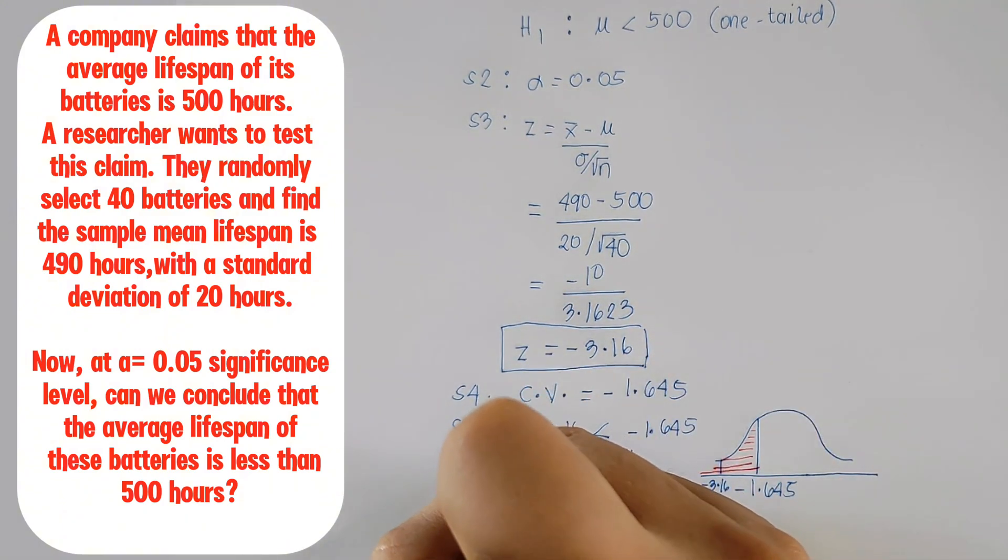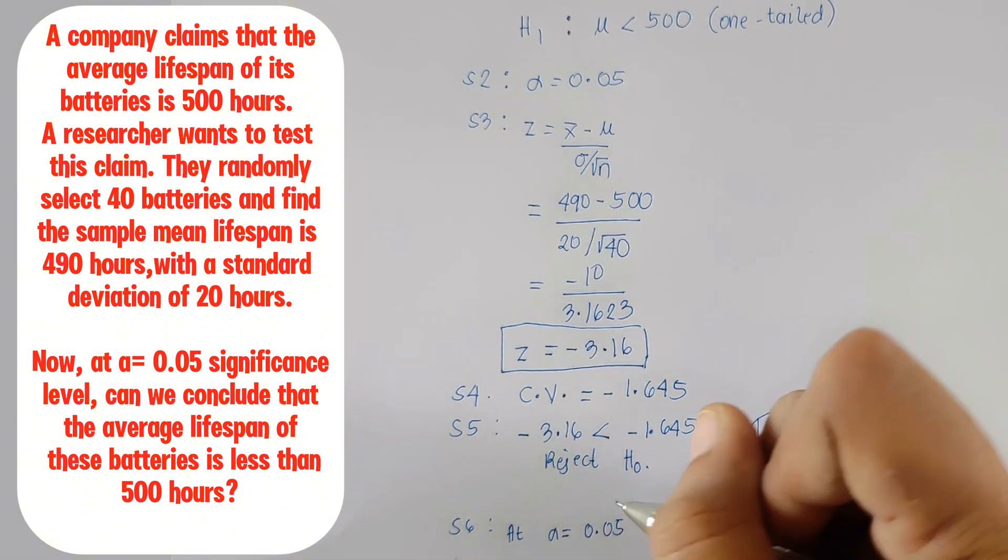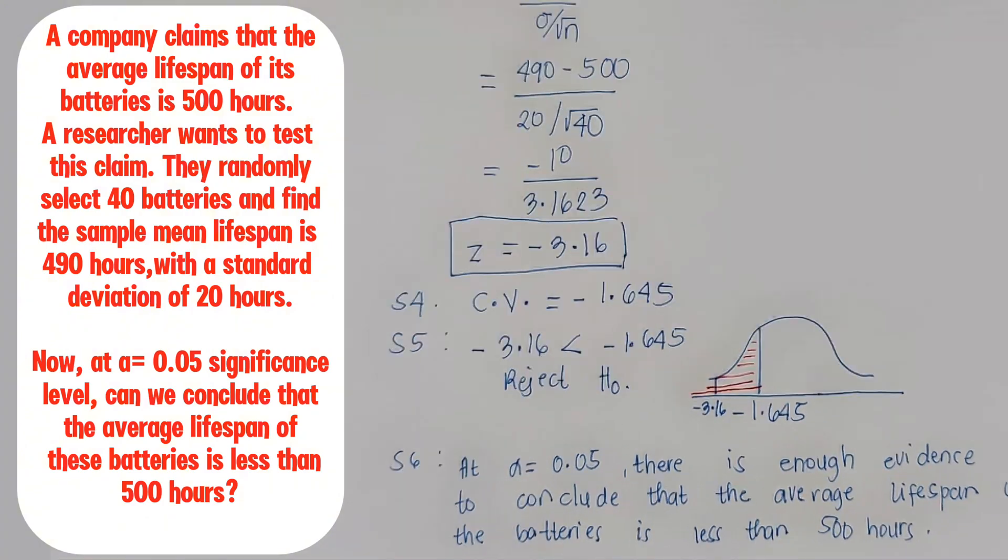Final step is to construct a conclusion. Since we reject the null hypothesis, we can say that at 0.05 significance level, we have enough evidence to conclude that the average lifespan of the batteries is less than 500 hours. The company's claim doesn't hold up in this test.